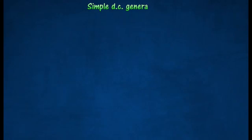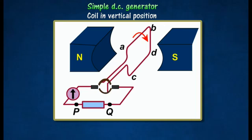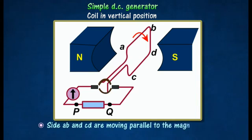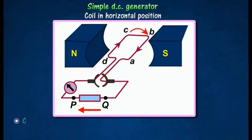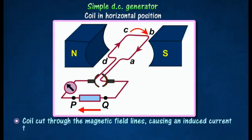Working Principle of Simple Direct Current Generator. As the coil rotates through the vertical position, the sides AB and CD are moving parallel to the magnetic field. As a result, no electromotive force is induced in the coil. As the coil moves past the vertical position, it will begin to cut through the magnetic field lines, causing an induced current to flow in the coil.